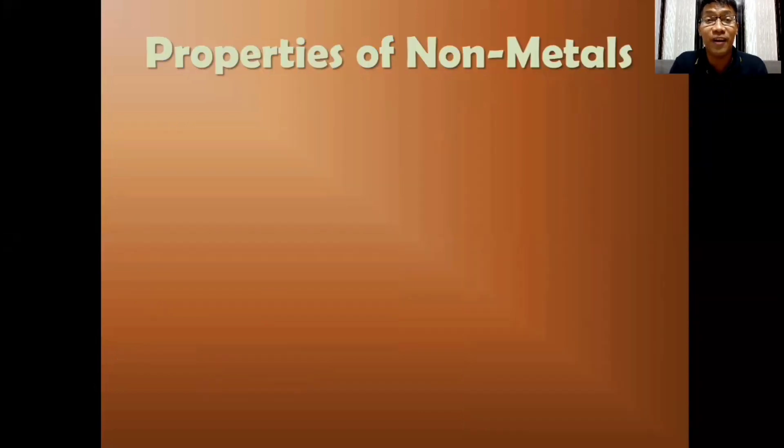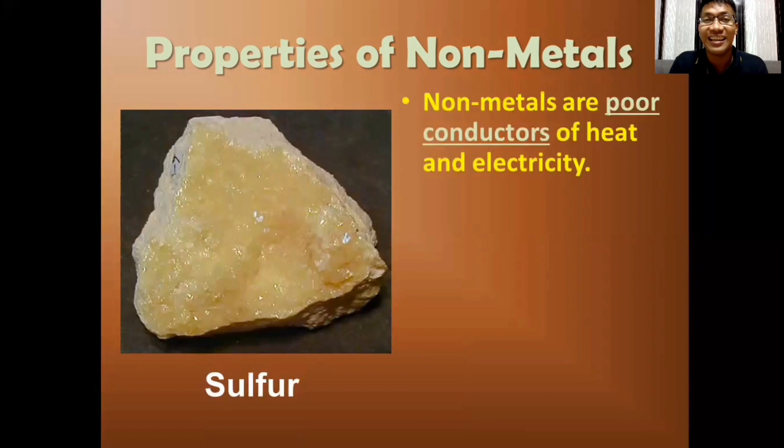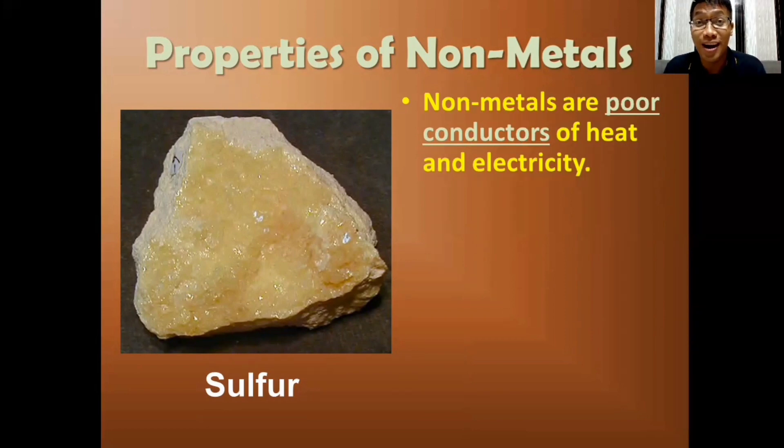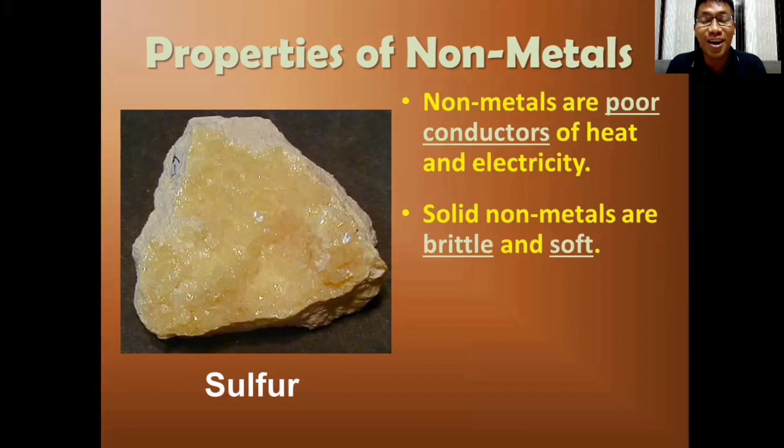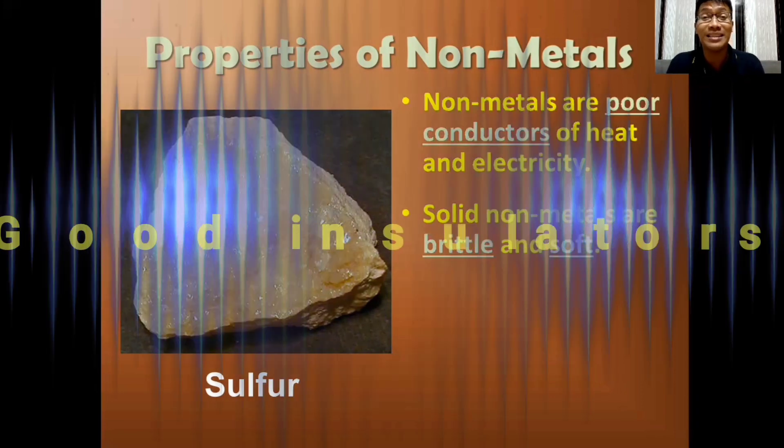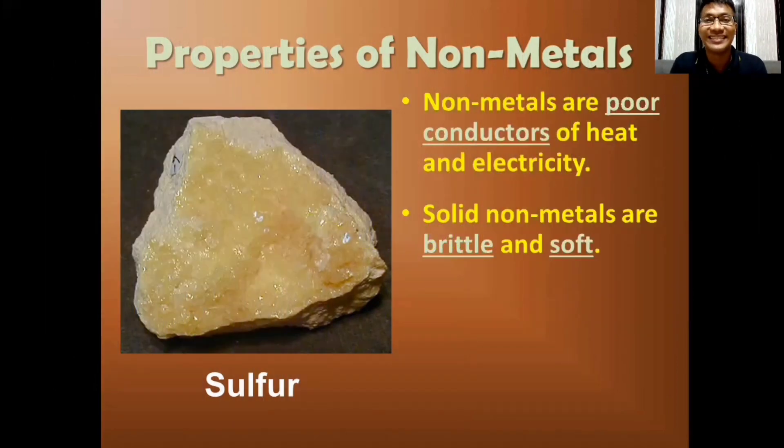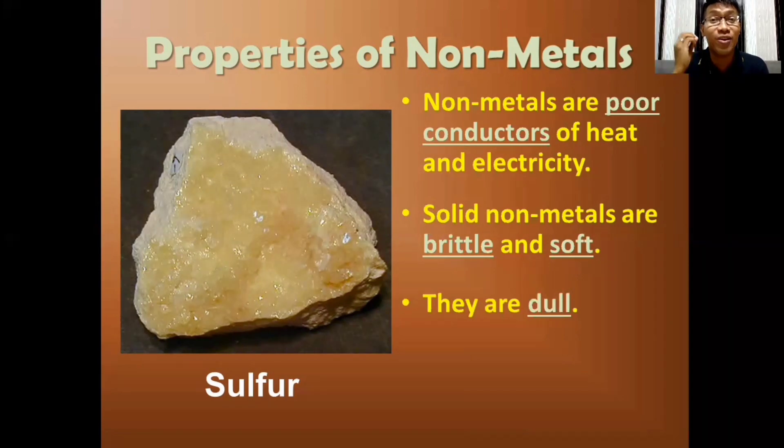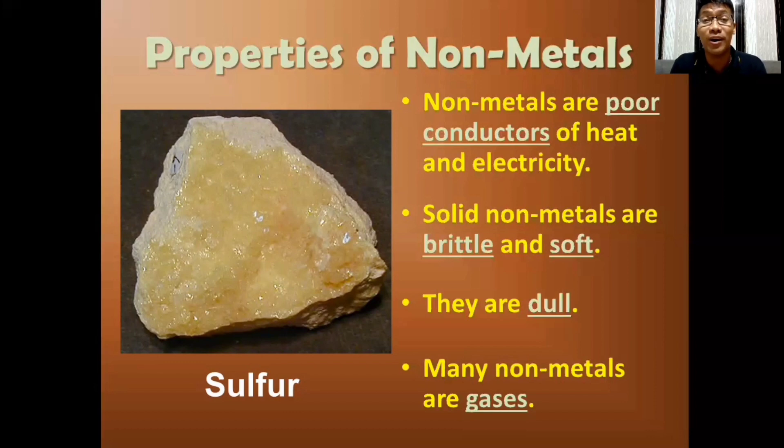Non-metals have the following properties. They are poor conductors of heat and electricity. This means heat or electricity cannot pass through them quickly. Therefore, non-metals are described as good insulators. Solid non-metals are brittle and soft, so they break or get damaged easily. Non-metals are commonly dull. So they don't reflect light or are not shiny by nature. And lastly, most of our non-metals are in the form of gases.